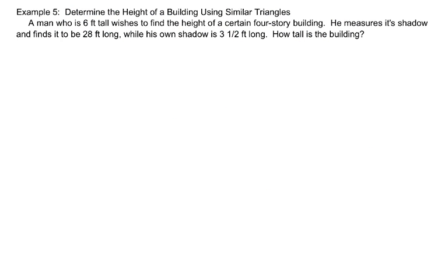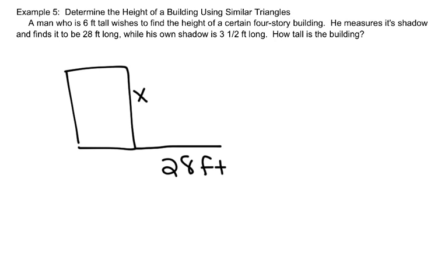The last thing that I'm going to do in this video is talk about determining the height of a building using similar triangles. A man who is 6 feet tall wishes to find the height of a certain 4-story building. He measures the shadow and finds it to be 28 feet long, while his own shadow is 3.5 feet long. How tall is the building? Here's the building. I don't know how high it is, so I'll call that X, but I know the shadow is 28 feet long. And I know that the shadow makes a right triangle with the ground.